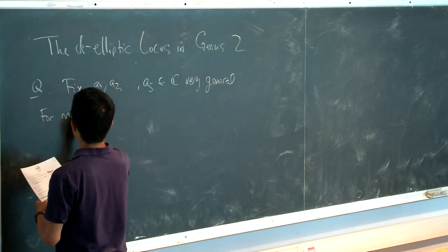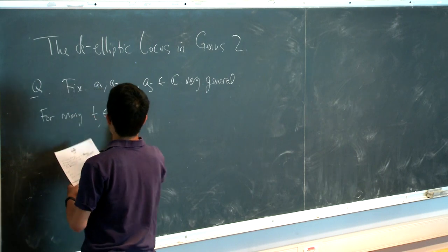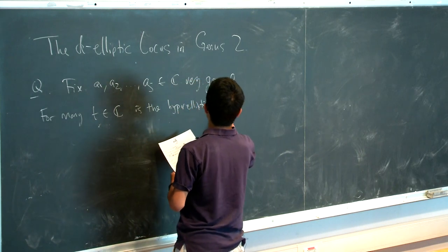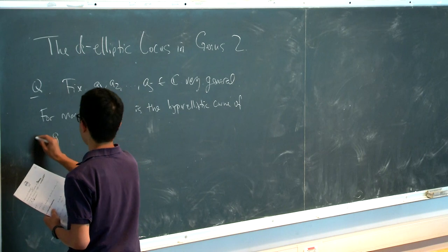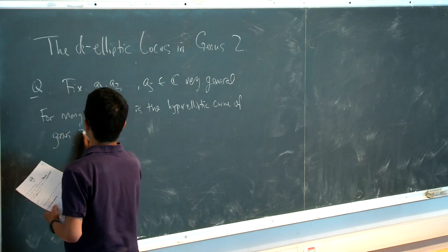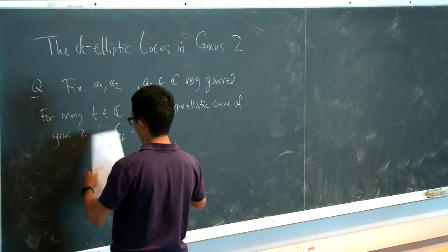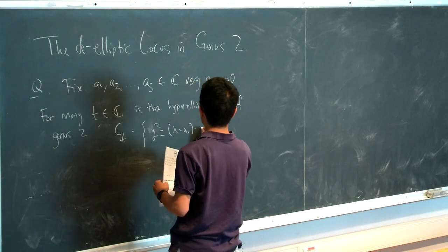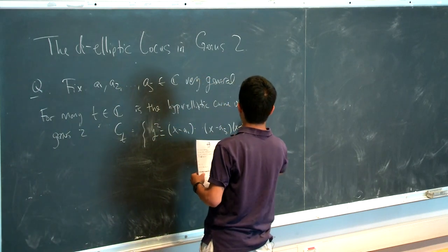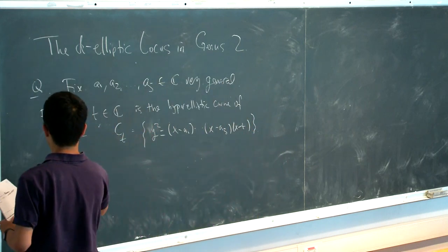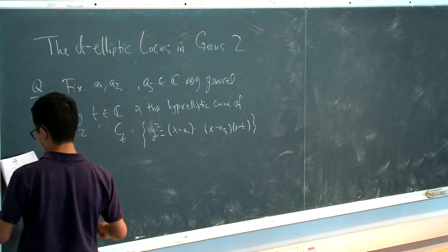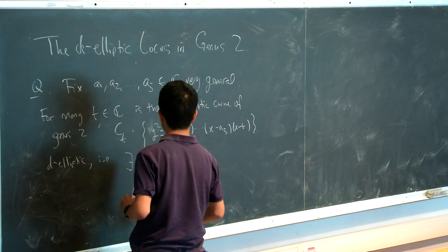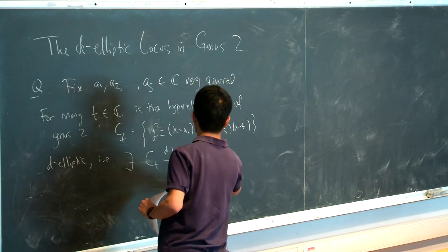So the question is, for how many T is the hyperelliptic curve of genus 2, so I'll call it C_T, defined by the equation y squared, branched over these six points. So x minus A1, x minus A5, x minus T, D-elliptic, by which I mean there exists a cover of some elliptic curve of degree D.